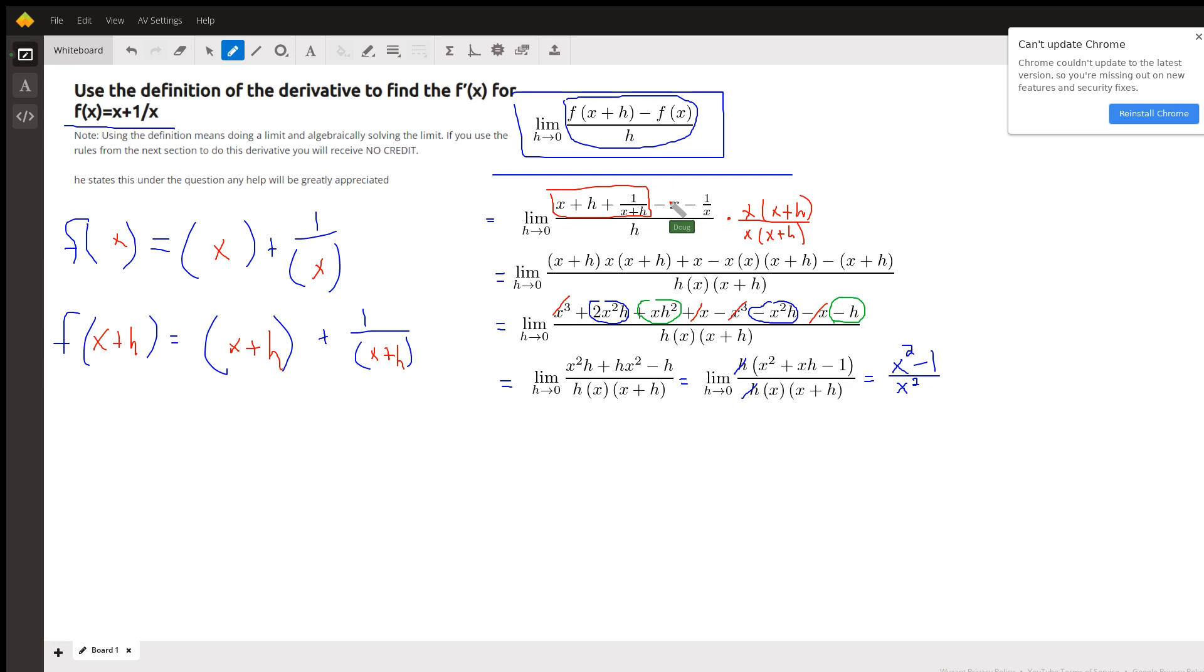Now you have a choice on how to simplify this expression. Myself, I treat this as a complex fraction. I'm going to multiply numerator and denominator of the big fraction by the LCD of all the little denominators, which is x times x plus h.